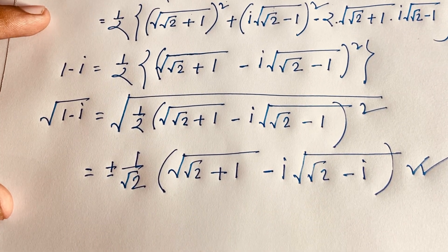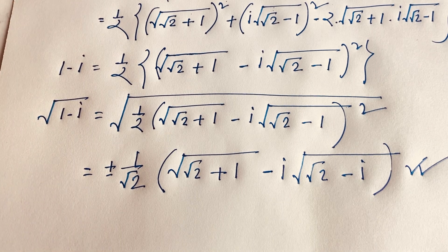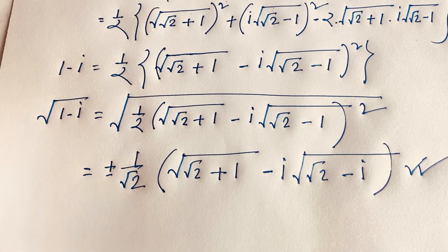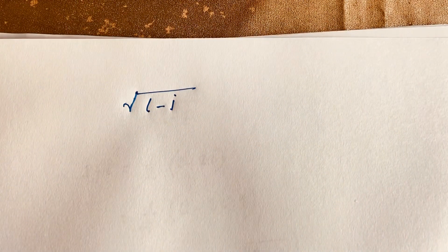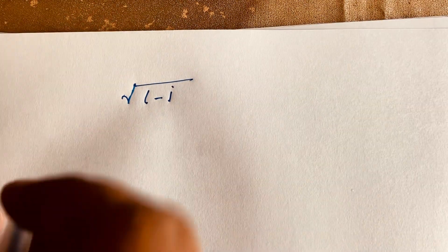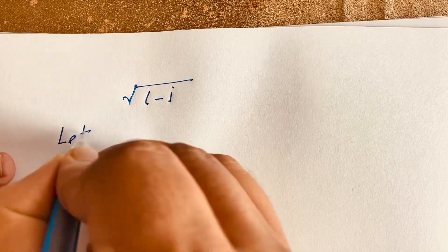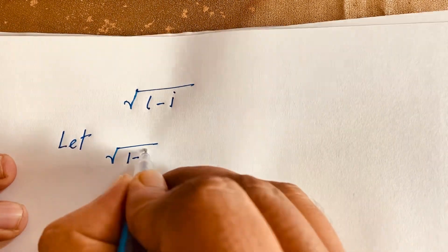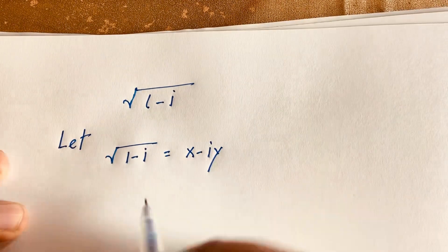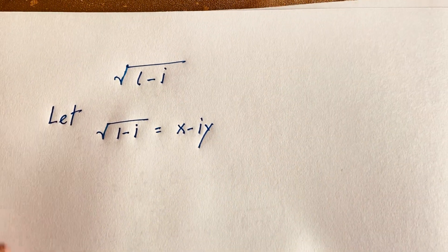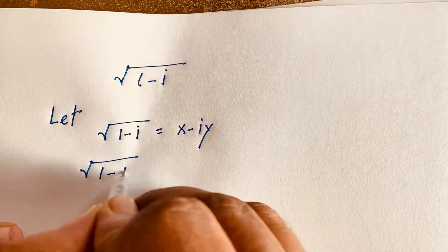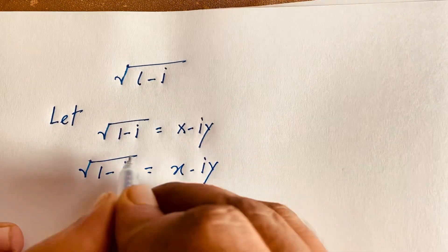Now I solve this a second way. Let square root of (1 minus i) equal (x minus iy). I let this substitution hold, then apply a square root to both sides.